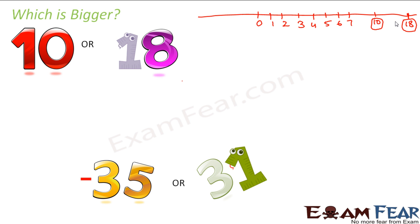Now things turn a little different when you have one positive number and one negative number. For example, if you have to decide between minus 35 and plus 31 which is bigger, how would you decide? One important thing to note is that as you move towards the right on the number line, the values increase — like 7 is greater than 2, 18 is greater than 7. So as you keep moving towards right, the values keep increasing. This is true not only for positive integers, but for the entire number line.